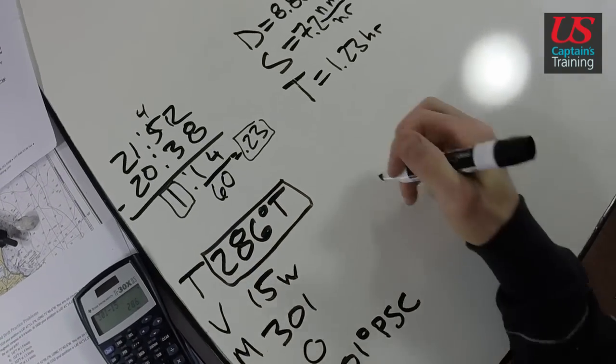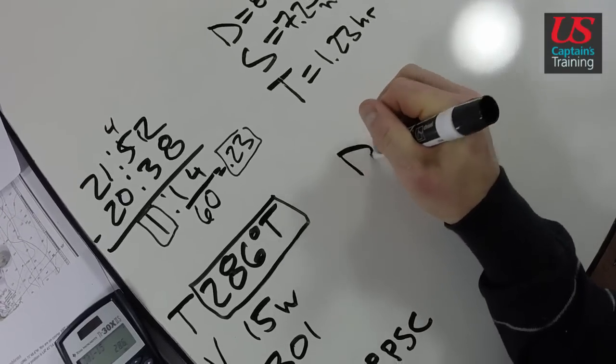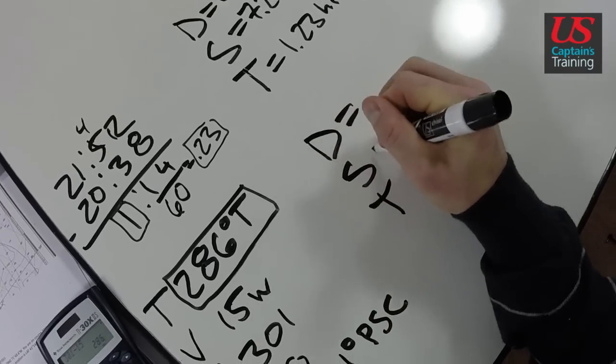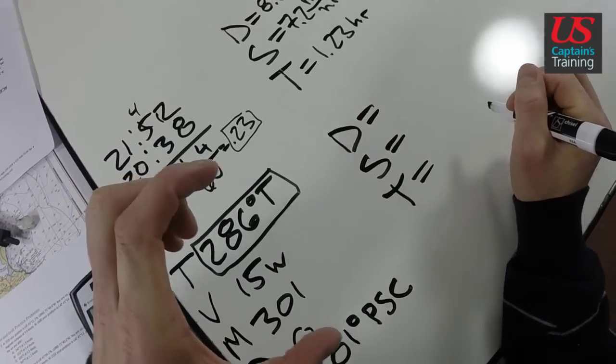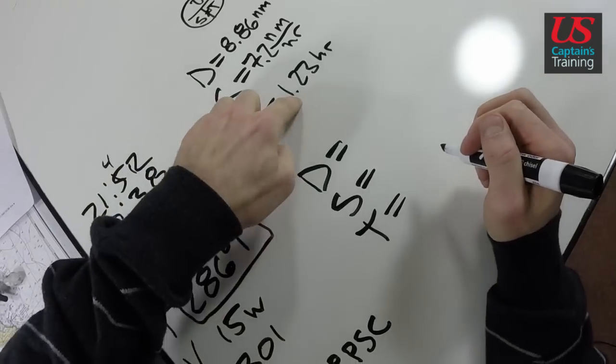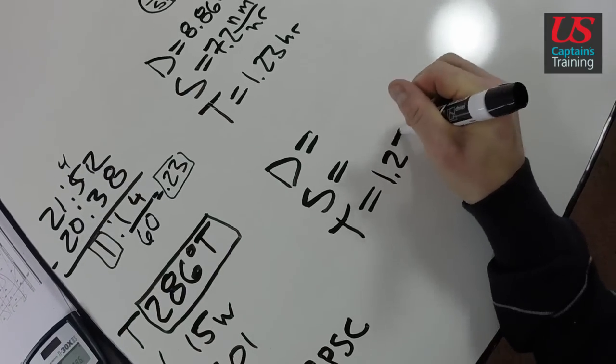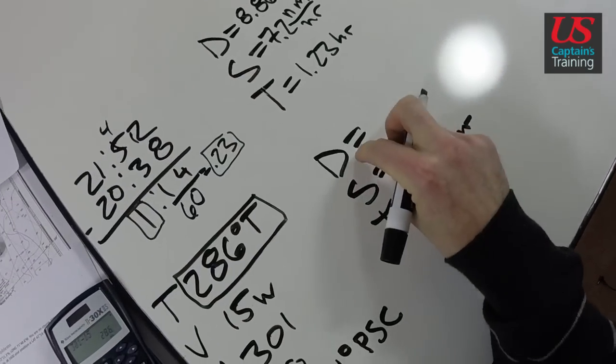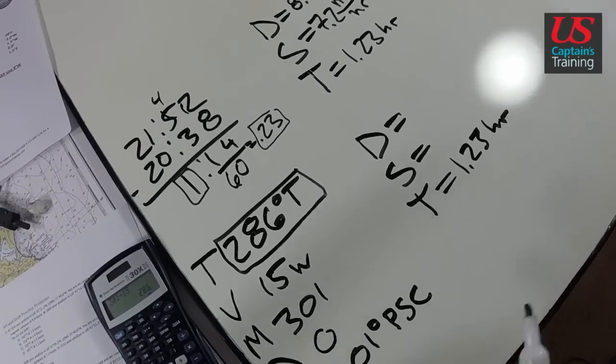And now when we do our drift, we're going to need another D street. I'm just going to set it up. Distance, speed, time. And our drift is, we were pushed that far in this same time. 1.23. So we already have our hours. And our distance will get off the chart. So now let's go to the chart.